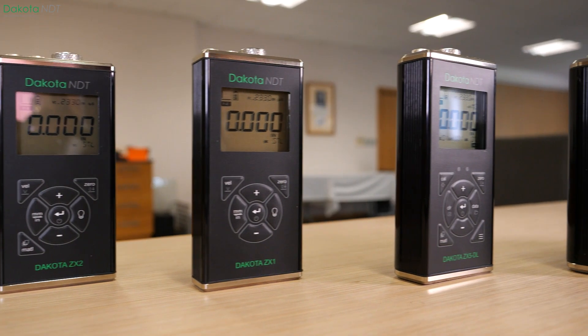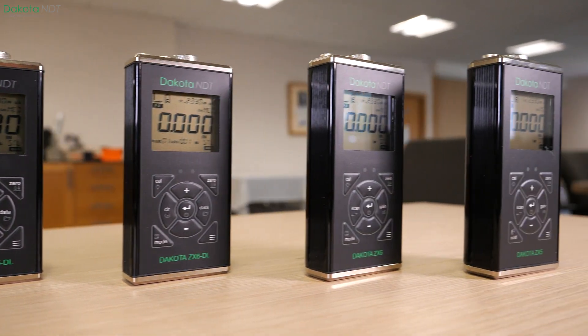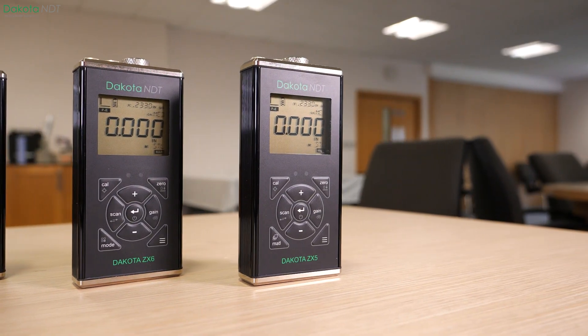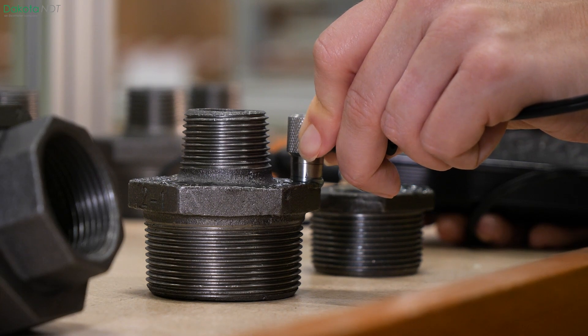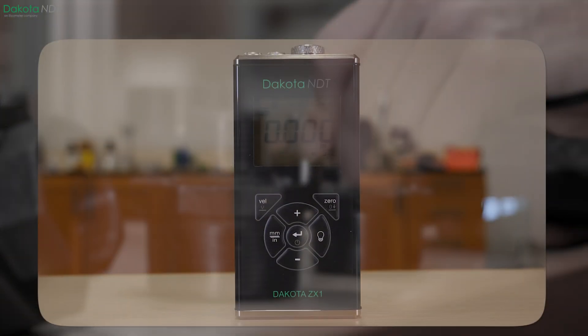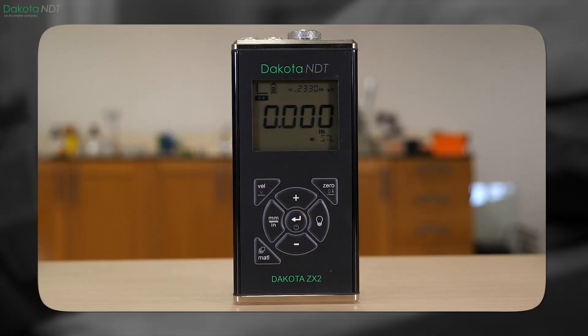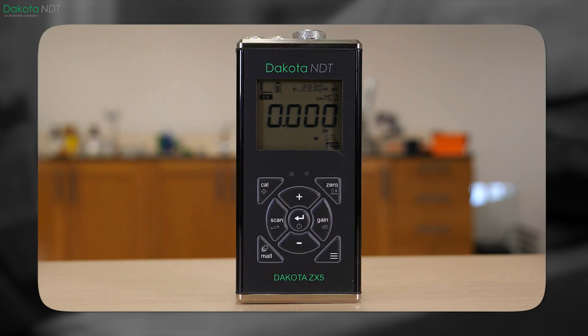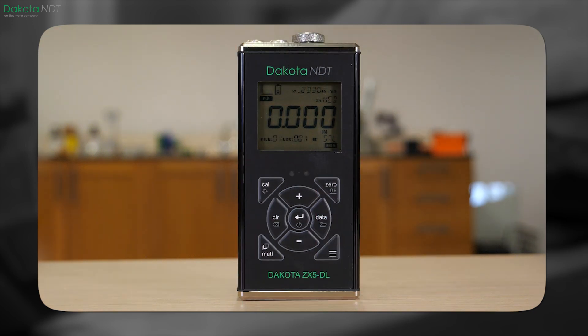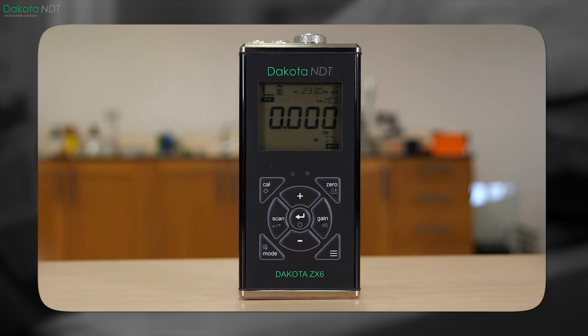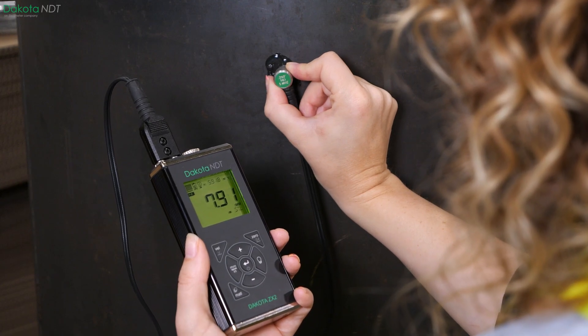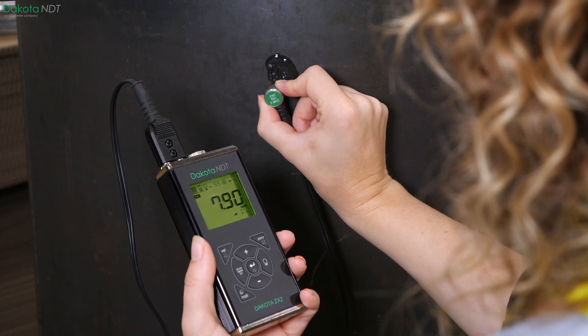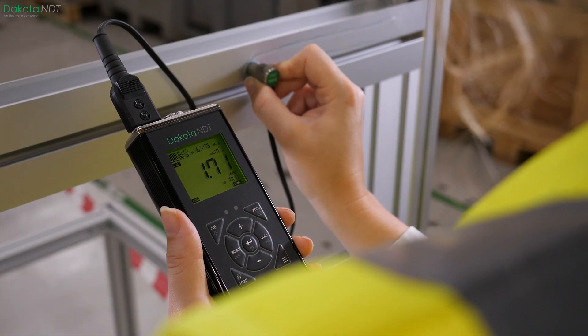The Dakota NDT ZX range consists of 7 different gauges, starting from basic steel-only measurement of the ZX1 and moving on to more complex products. Each numbered gauge in the range has access to all features of previous numbers, so everything you can do with the ZX2 you can also do with the ZX3 and so on.